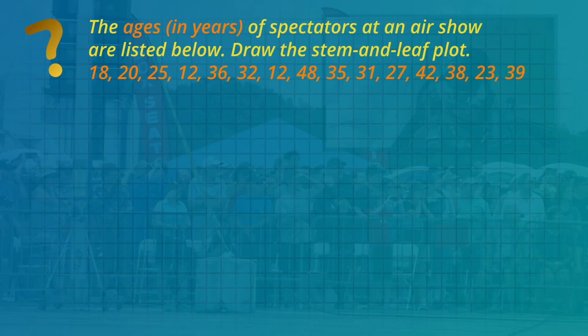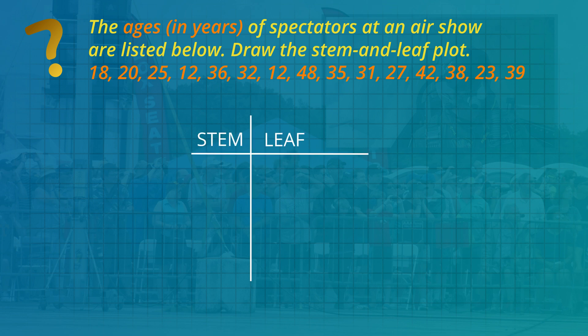The ages of spectators at an air show are listed below. Draw the stem and leaf plot. A stem and leaf plot is like a bar graph drawn horizontally but with numbers instead of the bars. There are two parts to the graph. The main part is the stem. In this example, because the ages range from the tens up to the forties, the stem goes from one up to four. The leaf, which has the units of the age numbers, branches to the right from the stem.